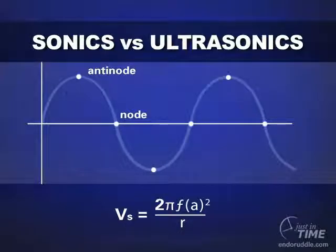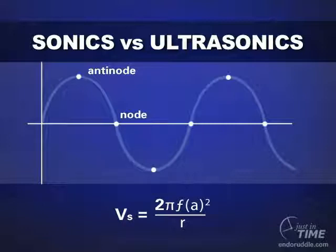Here you see the formula for streaming velocity — you might just think of streaming velocity as the potential to clean. Cleaning is directly proportional to the frequency, exponentially proportional to the amplitude, and inversely proportional to the radius of the instrument. Some groups in the world are looking at high frequencies like ultrasonics to solve the cleaning problem. Other groups are looking at amplitudes, because amplitudes that are squared have a big impact on cleaning potential.